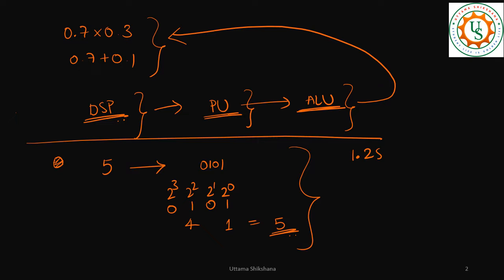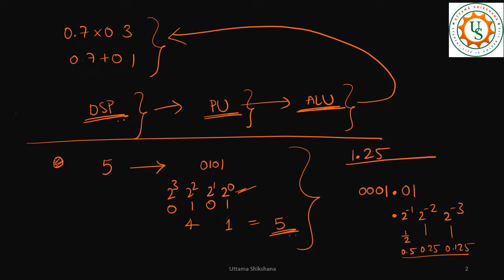Now let's take the floating point number 1.25 and represent it using the same principle. To represent 1, we use a 1 bit with zeros before it. For the fractional part 0.25, after the decimal point each bit represents negative powers of 2: 2^−1 = 0.5, 2^−2 = 0.25, 2^−3 = 0.125, and so on. So 0.25 means the 2^−2 bit is set, and all others are zero.